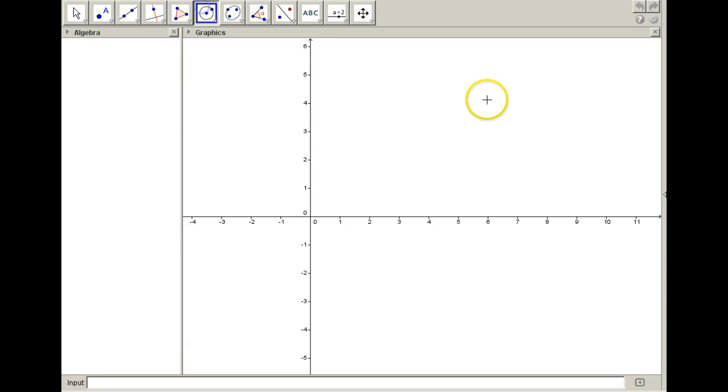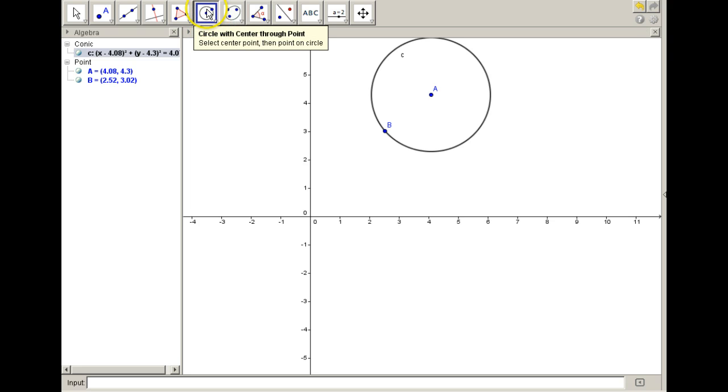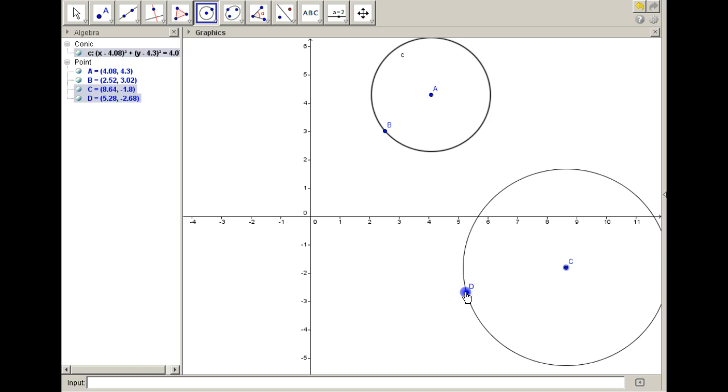Okay, so let's say you had two different circles. So I'm just going to make circle A and let's make circle C. Okay, and they're just randomly created.